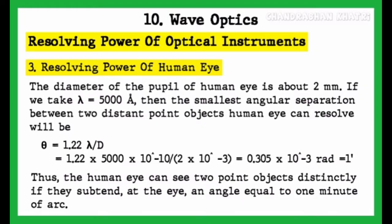Resolving power of human eye. The diameter of the pupil of the human eye is about 2 mm. Taking lambda equals 5000 angstrom, the smallest angular separation between two distant point objects the human eye can resolve is given by theta equals 1.22 lambda upon capital D.